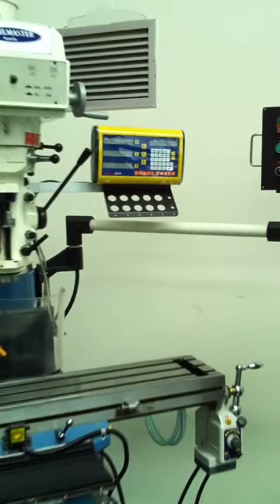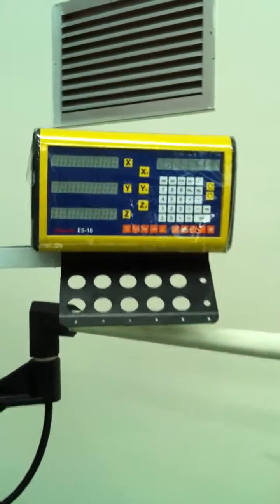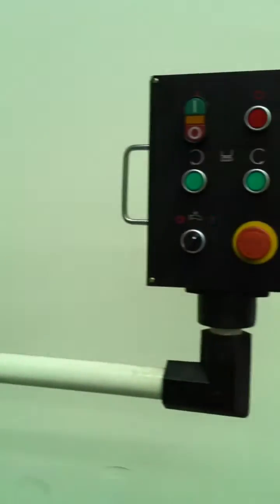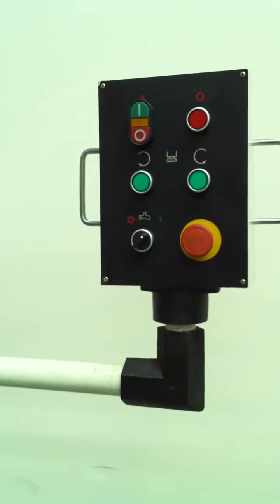Now our machines come standard with a 3-axis digital readout as you can see there, covering the Y, the X, and the Z. Spindle control head and the spindle control being located on the right-hand side.